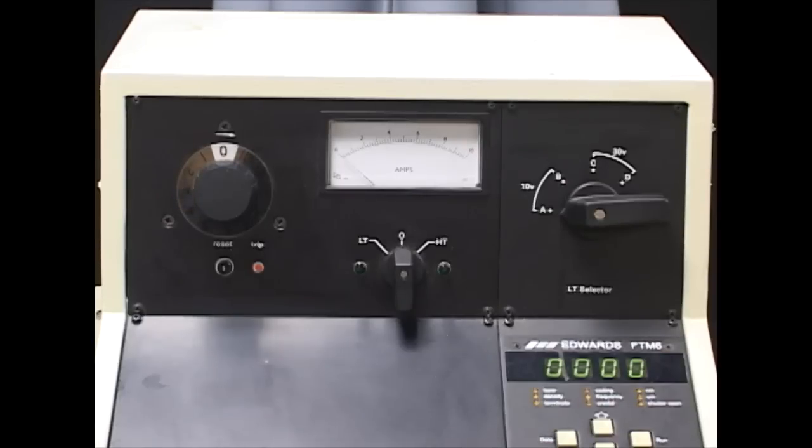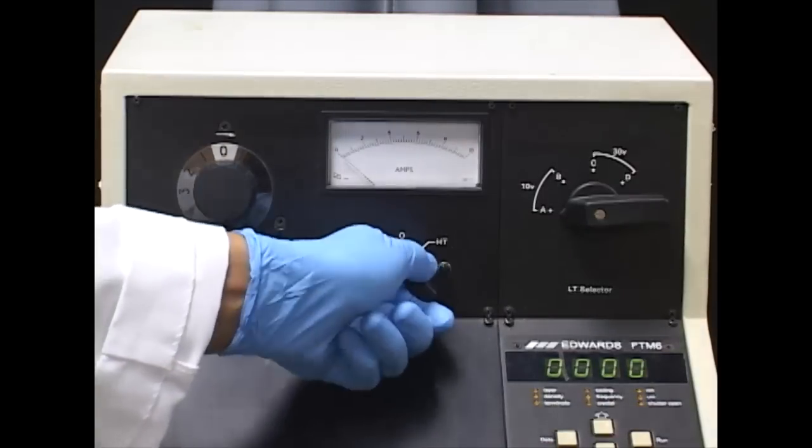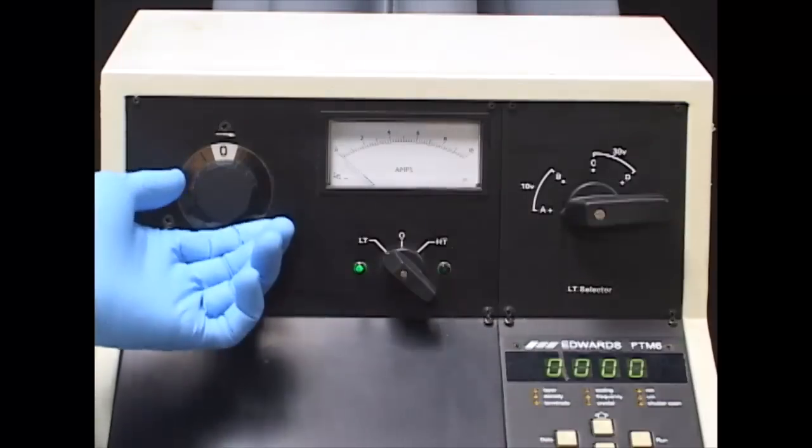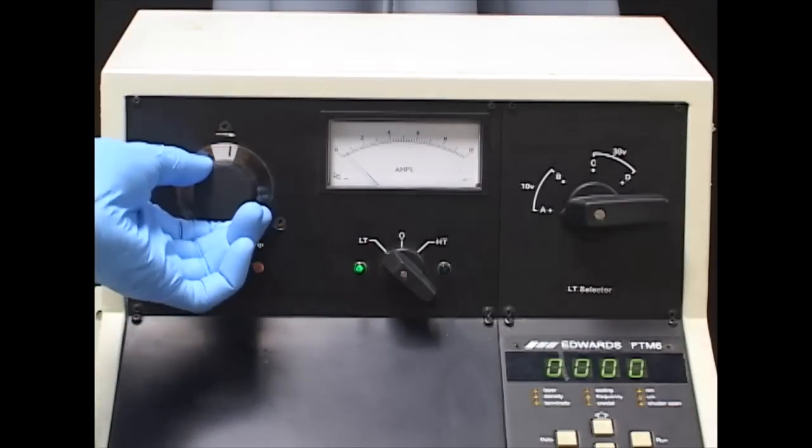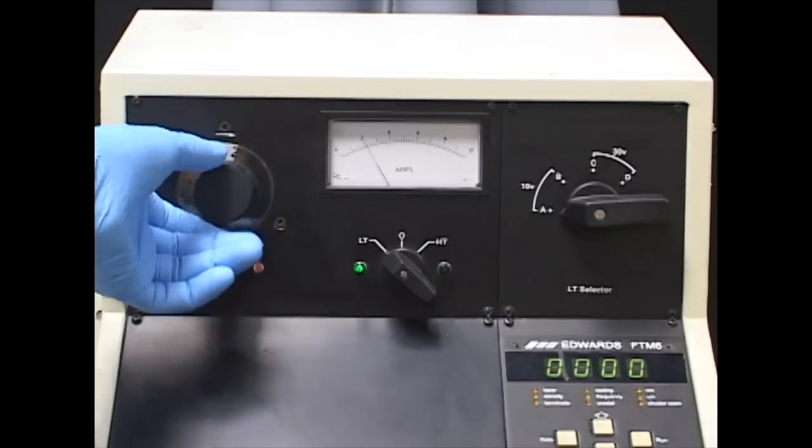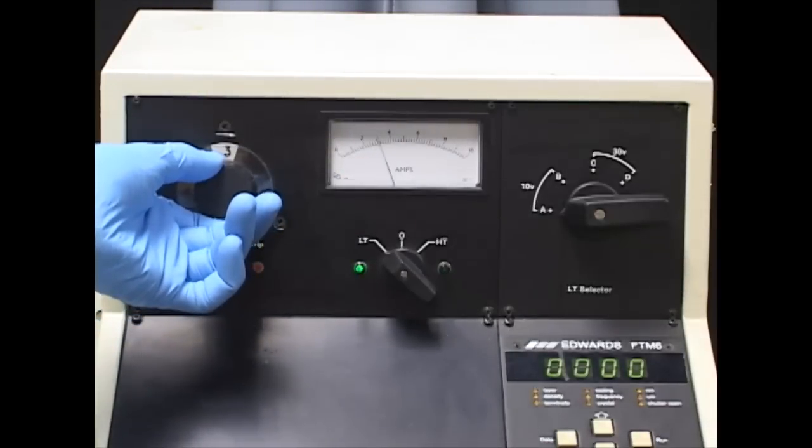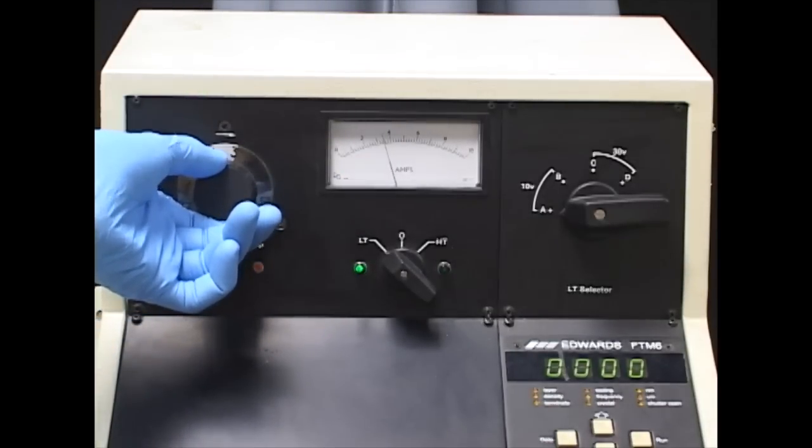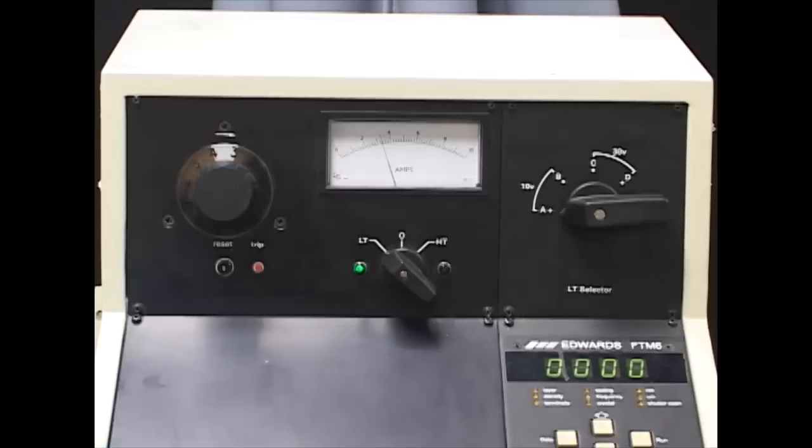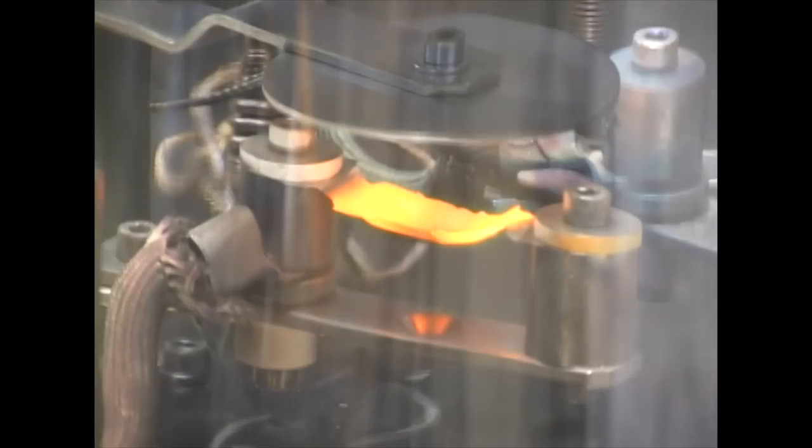To deposit our material onto our substrate, we turn this knob into LT and turn this knob slowly. As you can see, the amp is changing. For our silver, we point it to approximately 3.4 amps to 3.7 amps. As we continue to roll the knob and the amp increases, we can observe the change in the boat. The boat will slowly get hot until we get to the desired melting temperature.